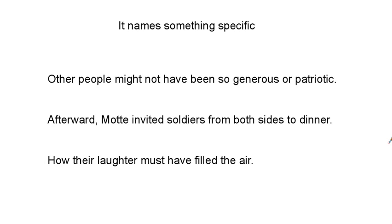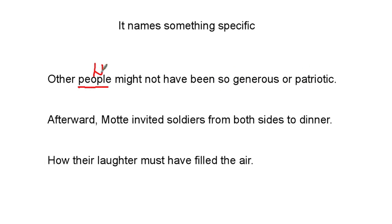Strategy three: it names something specific. As you saw, it's nice to have a little signifier pointing it out. Naming something specific is often a little trickier because you have to figure out, is it naming something? So let's go through it: 'Other people might not have been so generous or patriotic.' 'People' is naming a group of individuals, so we know that's a noun. 'Might not have been' is one long verb phrase. 'Generous' and 'patriotic' are both adjectives, so the only thing naming something specific is that noun.